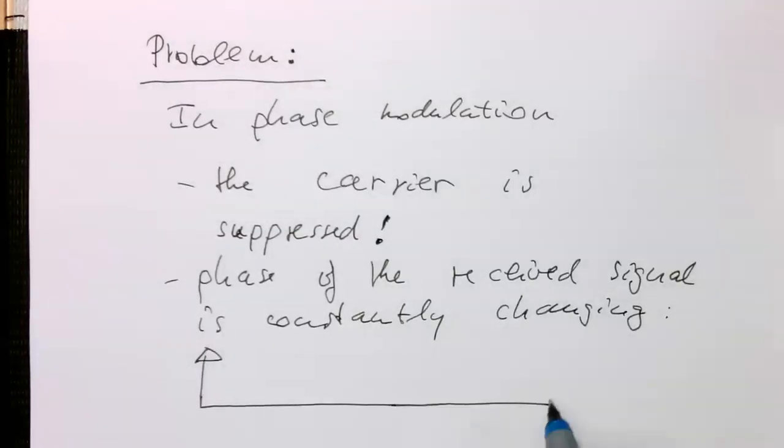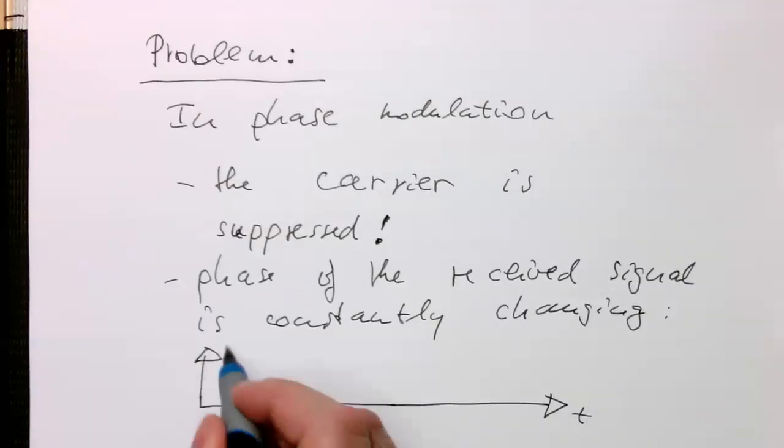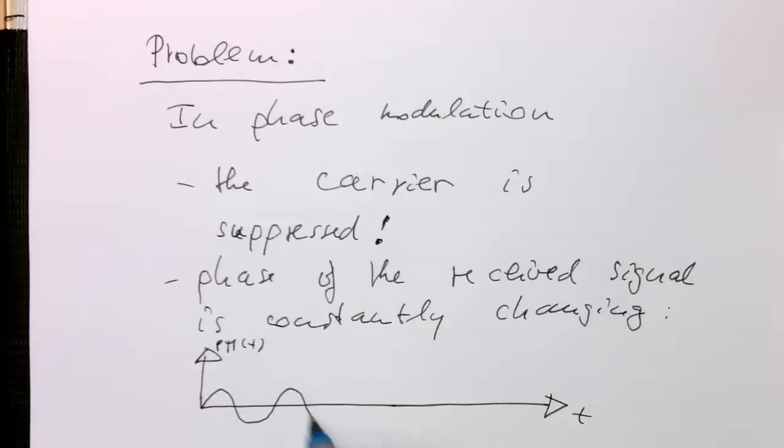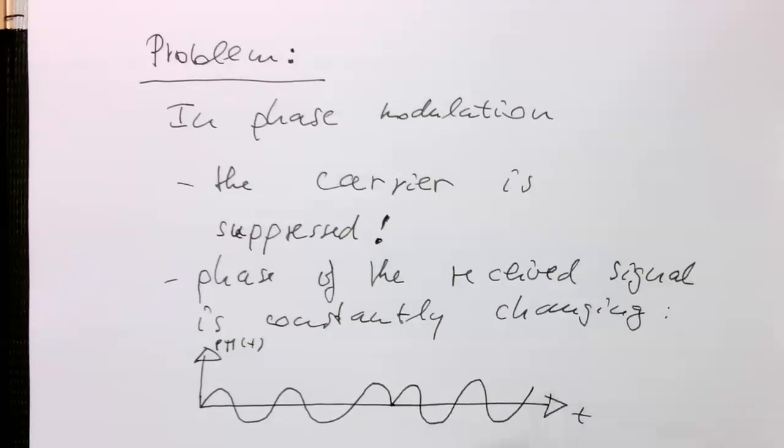So let's just draw this a bit longer. That's time. So that's our phase modulated signal. We have something like that. And then suddenly we have a phase change to indicate maybe from a zero to one or one to a zero.